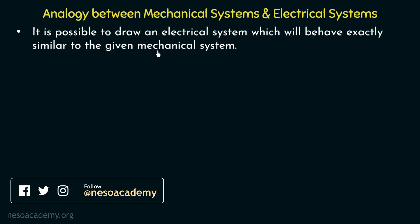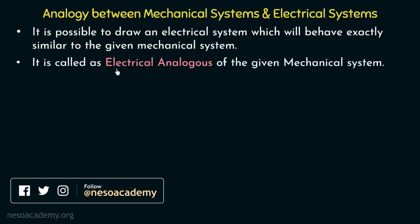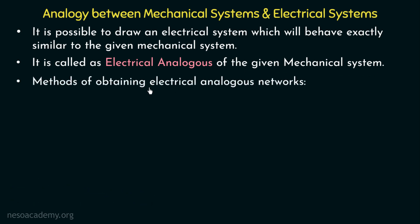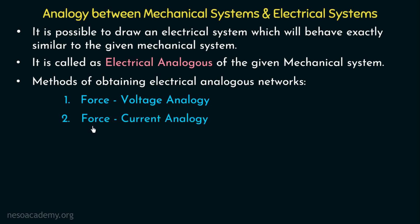There exists a similarity between mechanical systems and electrical systems and their equilibrium equations, and that's why it is possible to draw an electrical system which will behave exactly similar to the given mechanical system. We can draw an electrical network which will behave exactly similar to this mechanical system, and this electrical system is called the electrical analogous of the given mechanical system. There are two methods by which we can obtain the electrical analogous networks: the first method is the force voltage analogy, and the second method is the force current analogy.